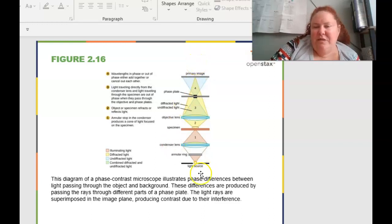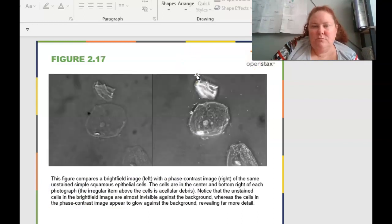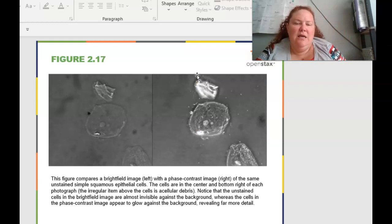So basically, down here in step one, an annular stop in the condenser produces a cone of light that's going to be focused on that specimen. And then the objects or the specimen refracts or reflects light. And then the light is traveling directly from the condenser lens and light traveling through the specimen are out of phase when they pass through the objective and the phase plates. And then the wavelength in the phase in or out of the phase either are together or cancel each other out. And so this is going to describe and illustrate the phase differences between the light passing through the object in that background.